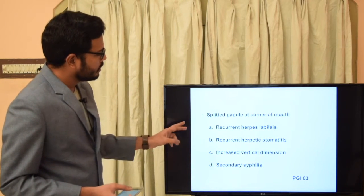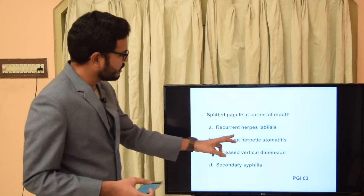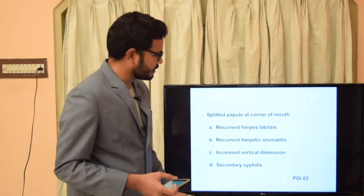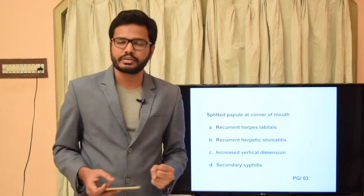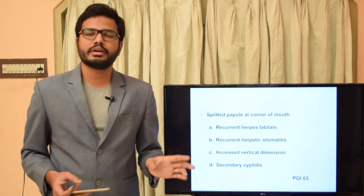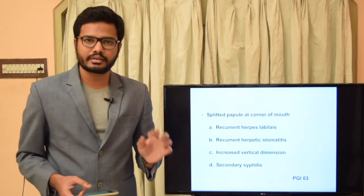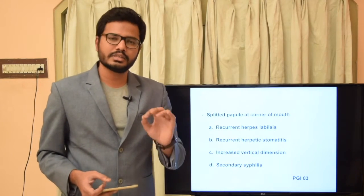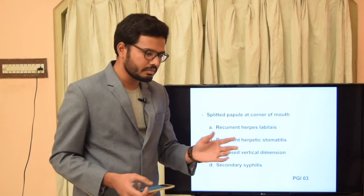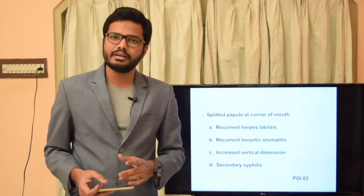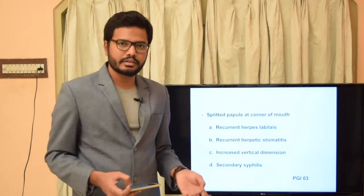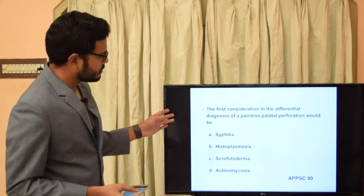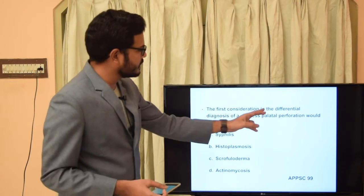Split papule at the corner of the mouth — asked in PGA 2003 — is a characteristic feature of secondary syphilis. These split papules are some of the oral lesions of secondary syphilis, apart from snail-track ulcers and mucous patches.